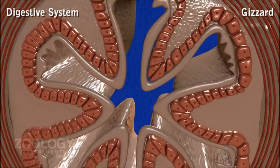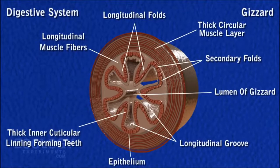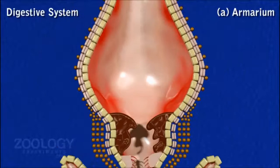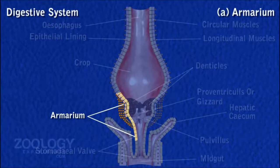The crop leads behind into a small cone-shaped, muscular, and thick-walled chamber called gizzard. It consists of two parts: an anterior armarium and a posterior stomodial valve. The armarium possesses internally six longitudinal folds that greatly reduce its lumen. The longitudinal folds alternate with six longitudinal grooves which also bear small secondary folds.